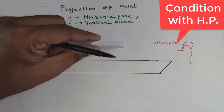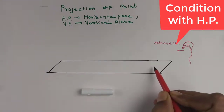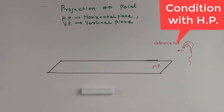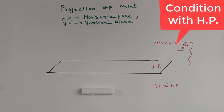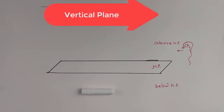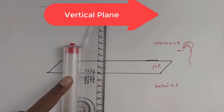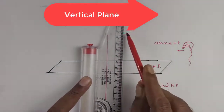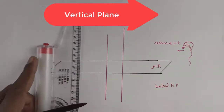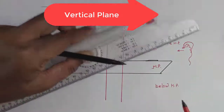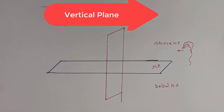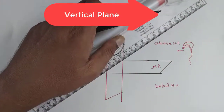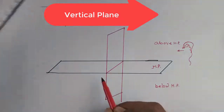If you change the position, the observer sees the object is below HP. Similarly, we can draw the vertical plane — the plane which is perpendicular to the ground. The intersection line is always called as the XY line.